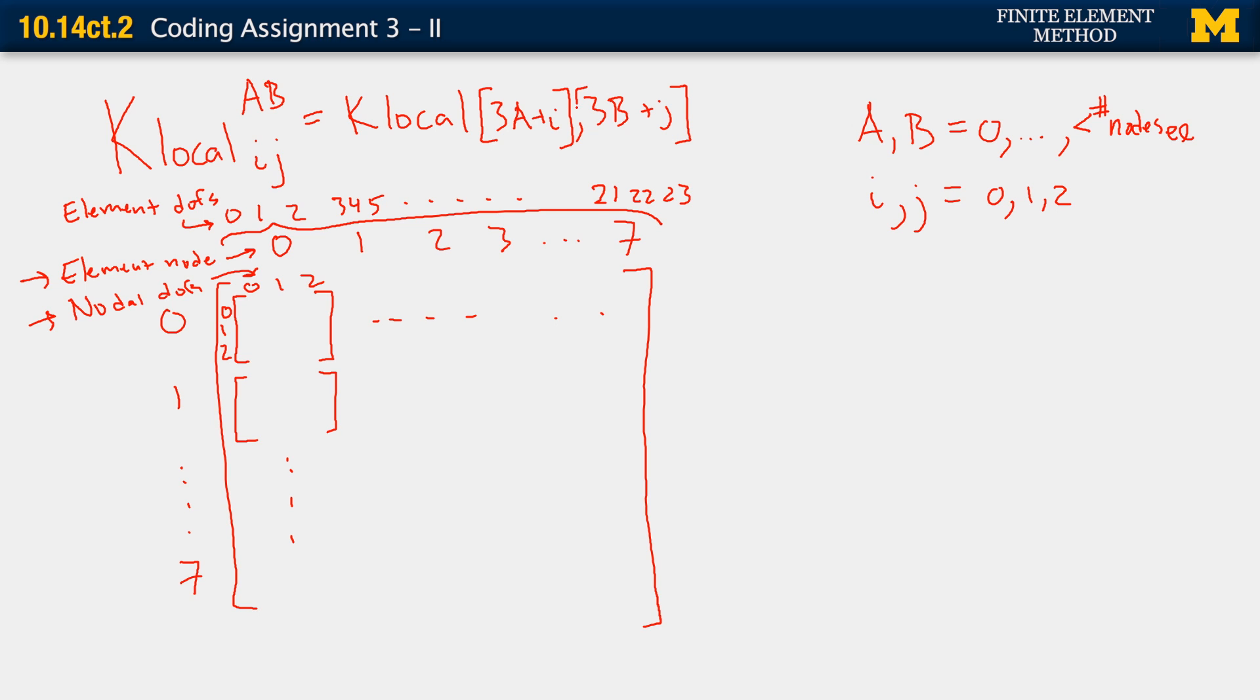I guess I should do square brackets on both of those. And you can see that that's true. Let's go to the, let's do it for 22 here. So that would be a is equal to 7. So 3 times 7 is 21. The nodal degree of freedom would be 1 at that point. So 21 plus 1 gives us an element degree of freedom of 22. And we'll work the same way for Flocal. For Flocal it would be Flocal a sub i would be the same as Flocal of 3 times a plus i. We'll look at that again in a second.